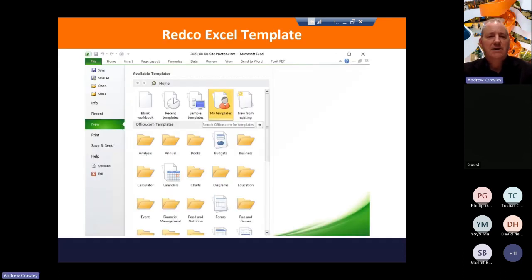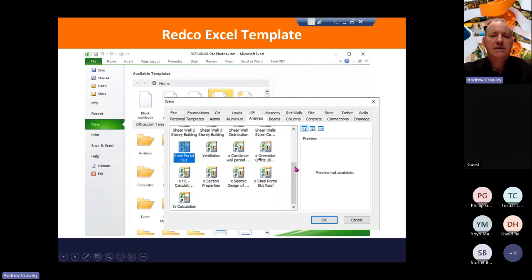So for people in Redcad, to find the spreadsheet it's under My Templates and under Analysis, and you'll find a steel portal BU. If you load that up, you can find out the bracing equivalent for a steel portal frame.